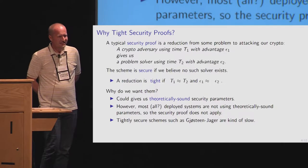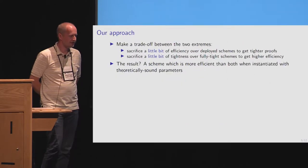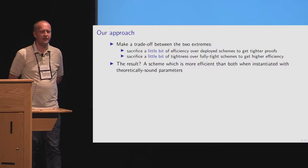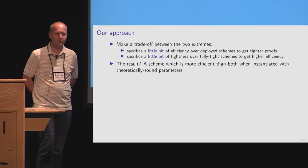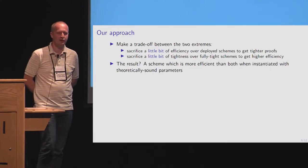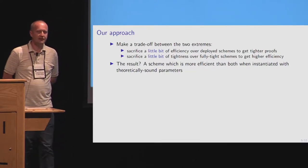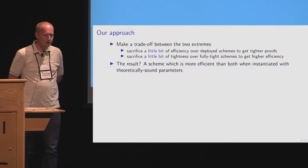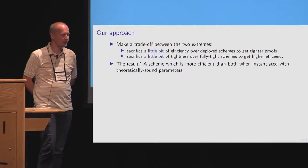Our approach in this paper is to make a trade-off. We're going to trade off a bit of efficiency compared to the fastest — and when we're talking efficiency, we're talking number of exponentiations — and we're going to trade off a little bit of tightness. The result is a hugely more efficient protocol when you instantiate it with theoretically sound parameters.